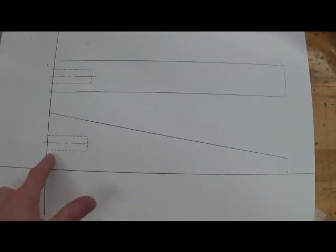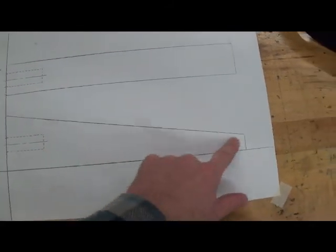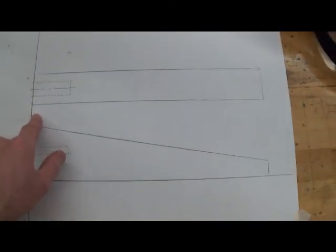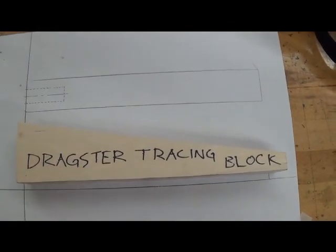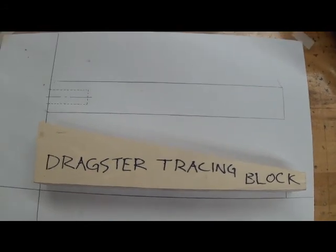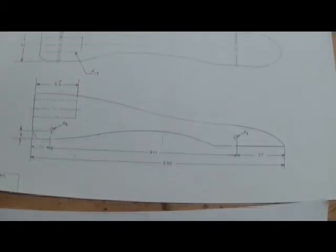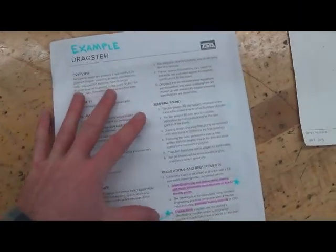One thing I want to remind you is that the only things that should be dark is this and this. This is just the tracing of the block. You should do that lightly because eventually you're going to erase that. I just have it dark here so you can actually see it. It's hard to see light lines in the video. The finished drawing should look something like these. But before you get too carried away with your drawing, you have to review the rules.